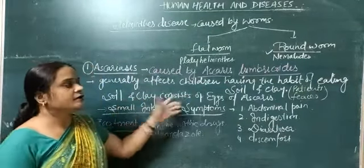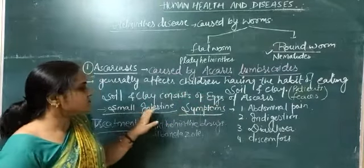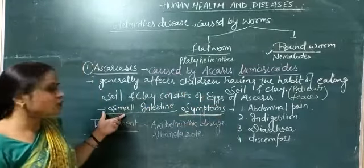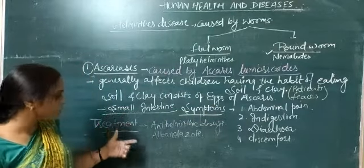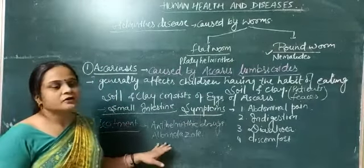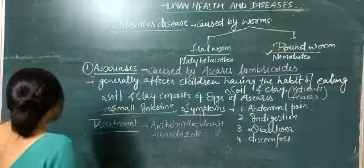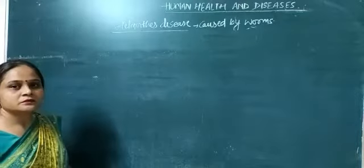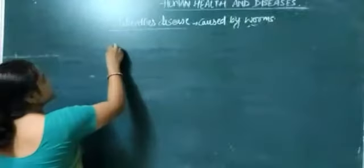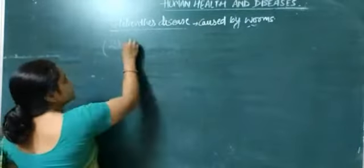To summarize Ascariasis: soil and clay contain the eggs of Ascaris; the main symptoms are as listed; the small intestine is the main affected organ; treatment is with anti-helminthic drugs, and albendazole can be used for treatment.